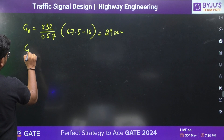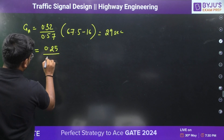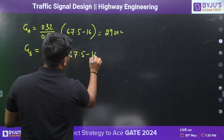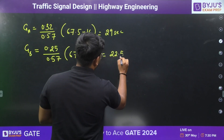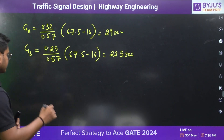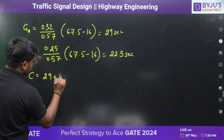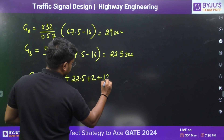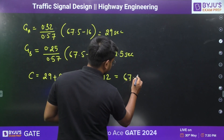Similarly, green time for road B: G_B = (0.25 / 0.57) × (67.5 − 16) = 22.5 seconds. We can provide 2 seconds of amber time to both roads. So total cycle length = green for A + amber for A + green for B + amber for B + all red time = 29 + 2 + 22.5 + 2 + 12 = 67.5 seconds.